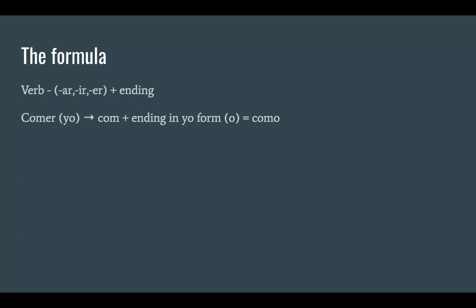We're trying to conjugate the verb 'comer' in the yo form. Look up at the formula — we're going to do comer minus the AR, IR, or ER. So it's just going to be 'com' because we took the ER off. Then we add the ending in the yo form, which is 'o'. So com plus o gives us 'como', and that's comer in the yo form. Pretty easy.